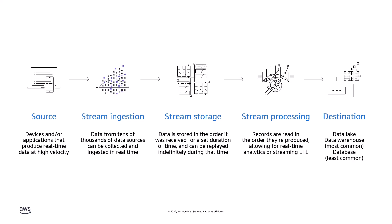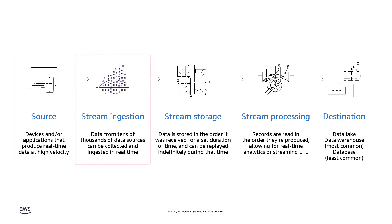At a very basic level, all stream processing applications include five stages. The process begins with data generated by multiple sources, or producers. These sources may include mobile SDKs, IoT devices, clickstream products, or application logs that produce real-time data at high velocity. Second is stream ingestion, when data from tens of thousands of data sources is collected and ingested in real-time. This stage may include value-add processes such as authentication or throttling, and can also filter out data from poor sources.